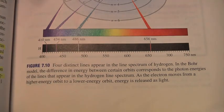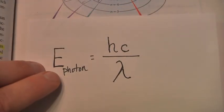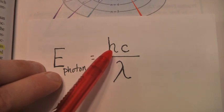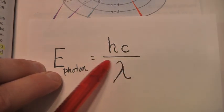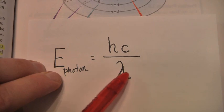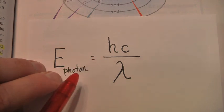What equation do we use? We use this equation. The energy of a photon is equivalent to Planck's constant times the speed of light divided by the wavelength. And we have the wavelength. This is a constant. This is a constant. If we do the math, we can find out the energy of that photon.